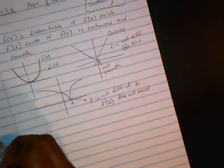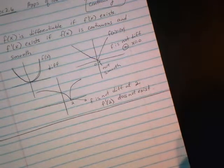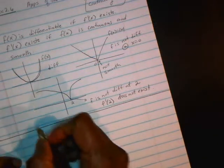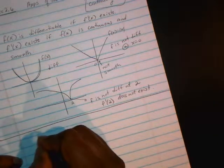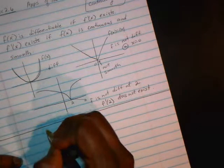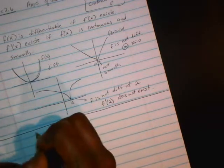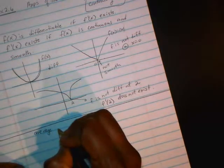So one of the big things is the application of the derivative, and it basically gives us the slope of a function, or the average rate of change, or the instantaneous rate of change.